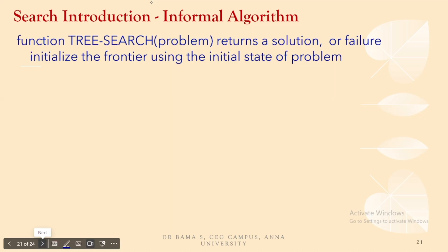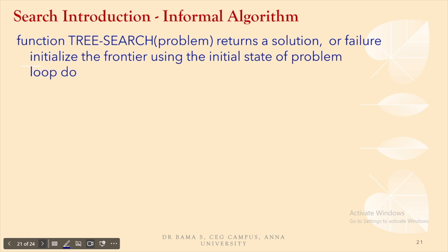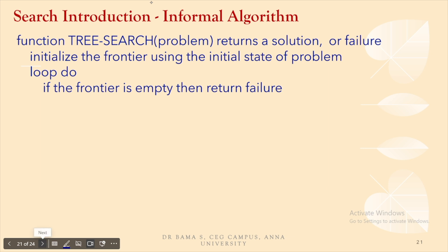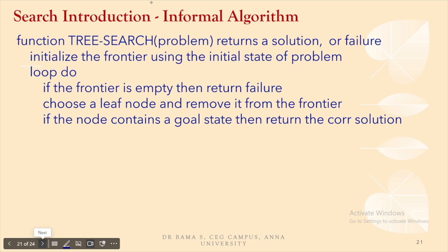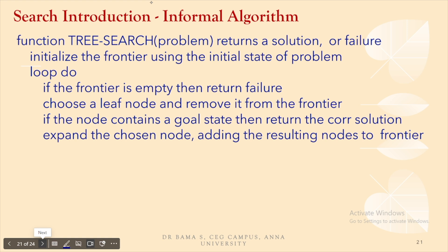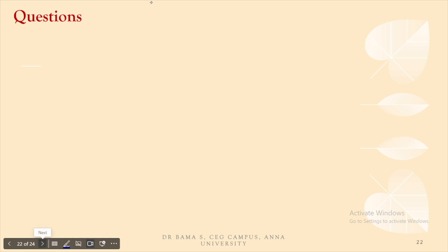The informal search algorithm returns a solution or a failure. First we initialize the frontier — the set of leaf nodes. Then we loop repeatedly: if the frontier is empty, return failure. Otherwise, choose a leaf node from the frontier and remove it. If it contains a goal state, return the corresponding solution; otherwise expand the chosen node.